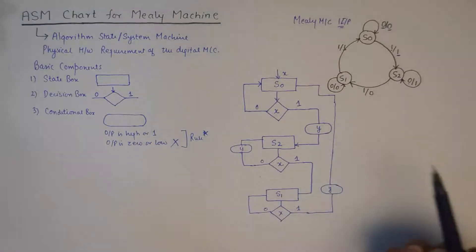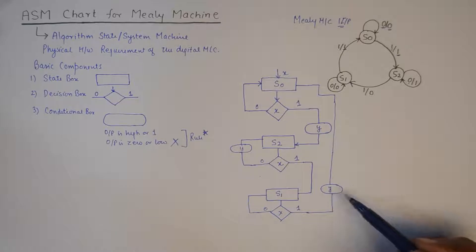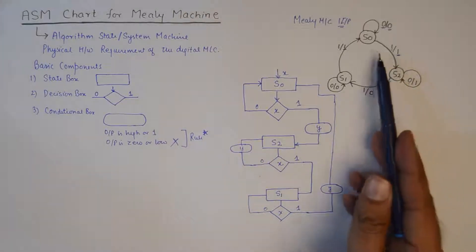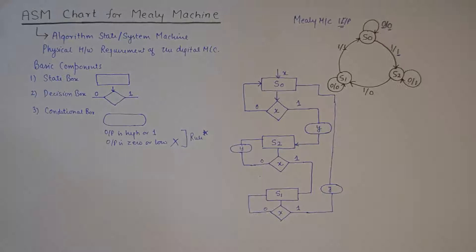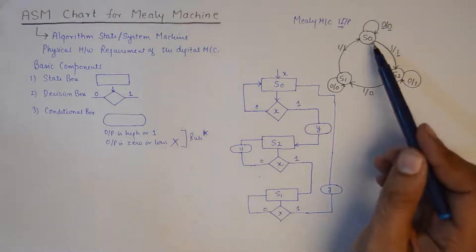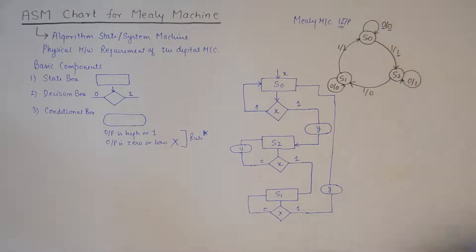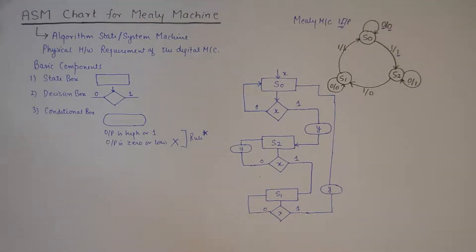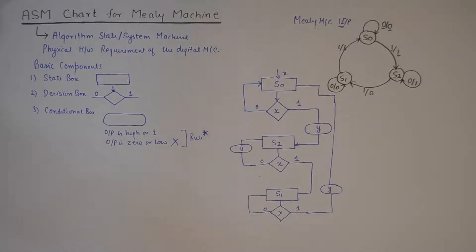Please understand that a Mealy machine will have these conditional boxes because the output is specified along the transitional paths. However, in a Moore machine the outputs are fixed to the states themselves, so no conditional box is required there. It's a key point that conditional boxes are used only in Mealy machines — Moore machines are easier to draw in terms of ASM chart because of the absence of conditional boxes.